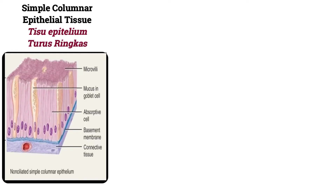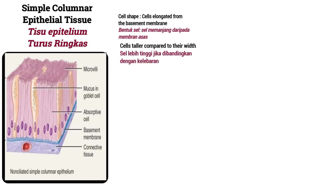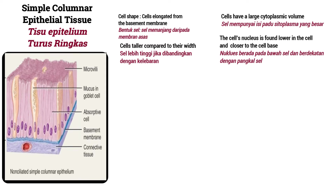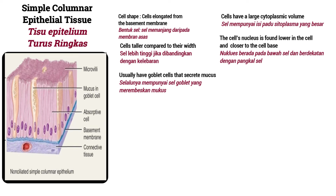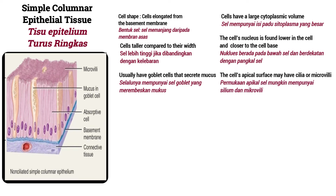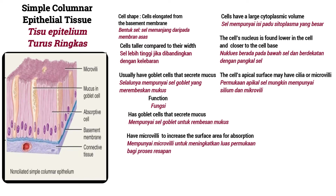Simple columnar epithelial tissue — cells elongate from the basement membrane, are taller compared to their width, and have a large cytoplasmic volume. The cell nucleus is found lower in the cell, closer to the cell base. Usually have goblet cells that secrete mucus. The apical surface may have cilia or microvilli. Function: goblet cells secrete mucus; microvilli increase the surface area for absorption.